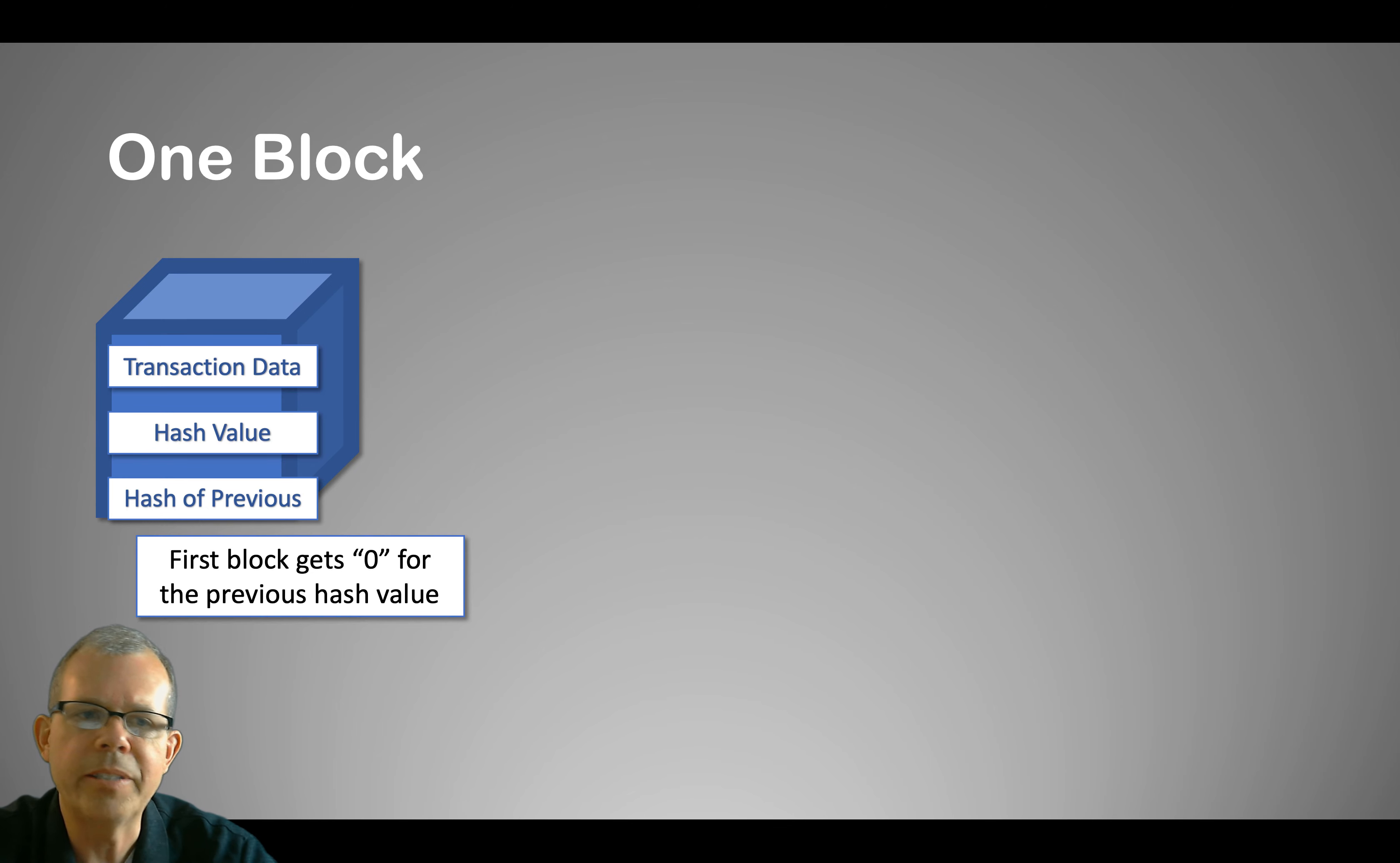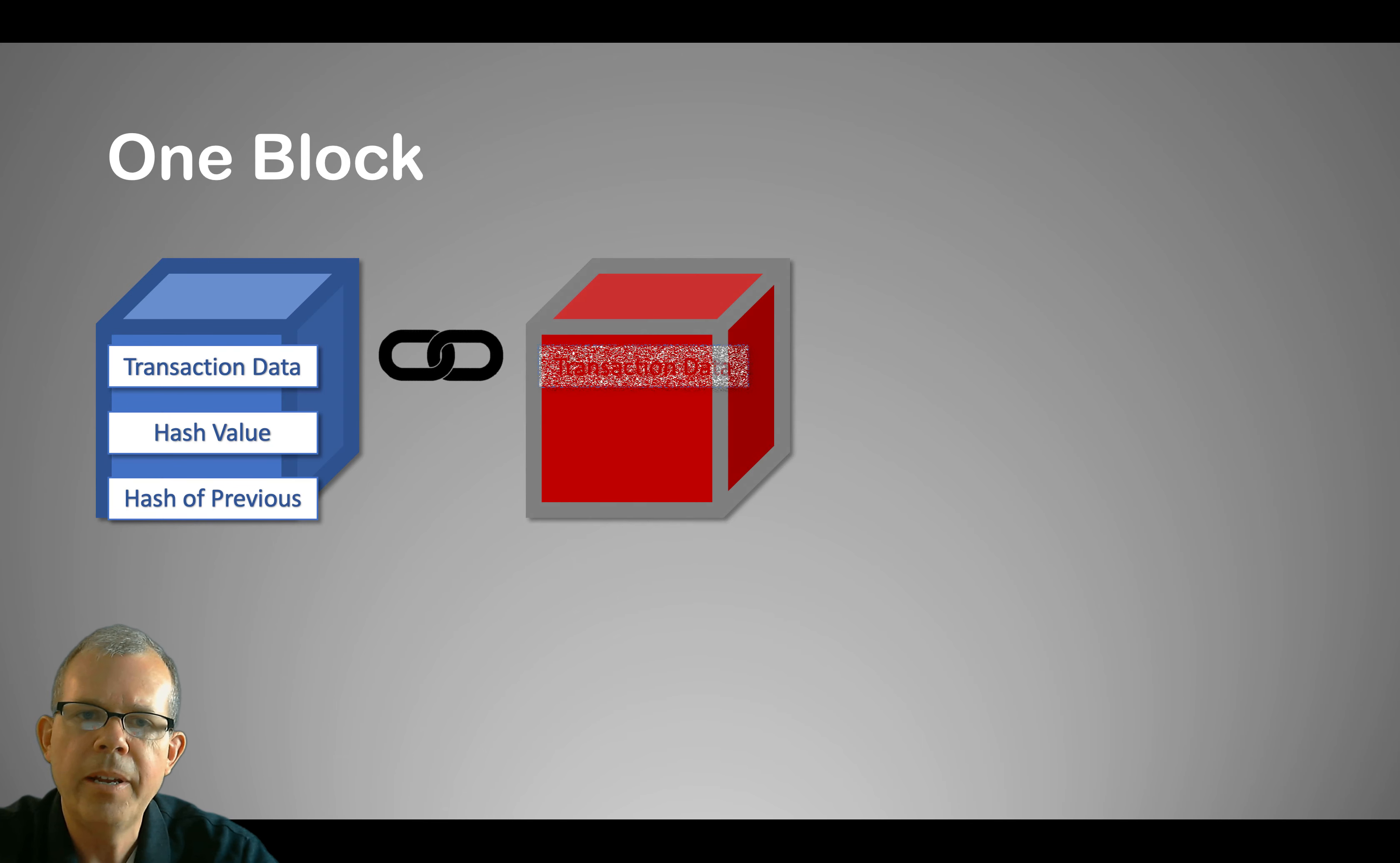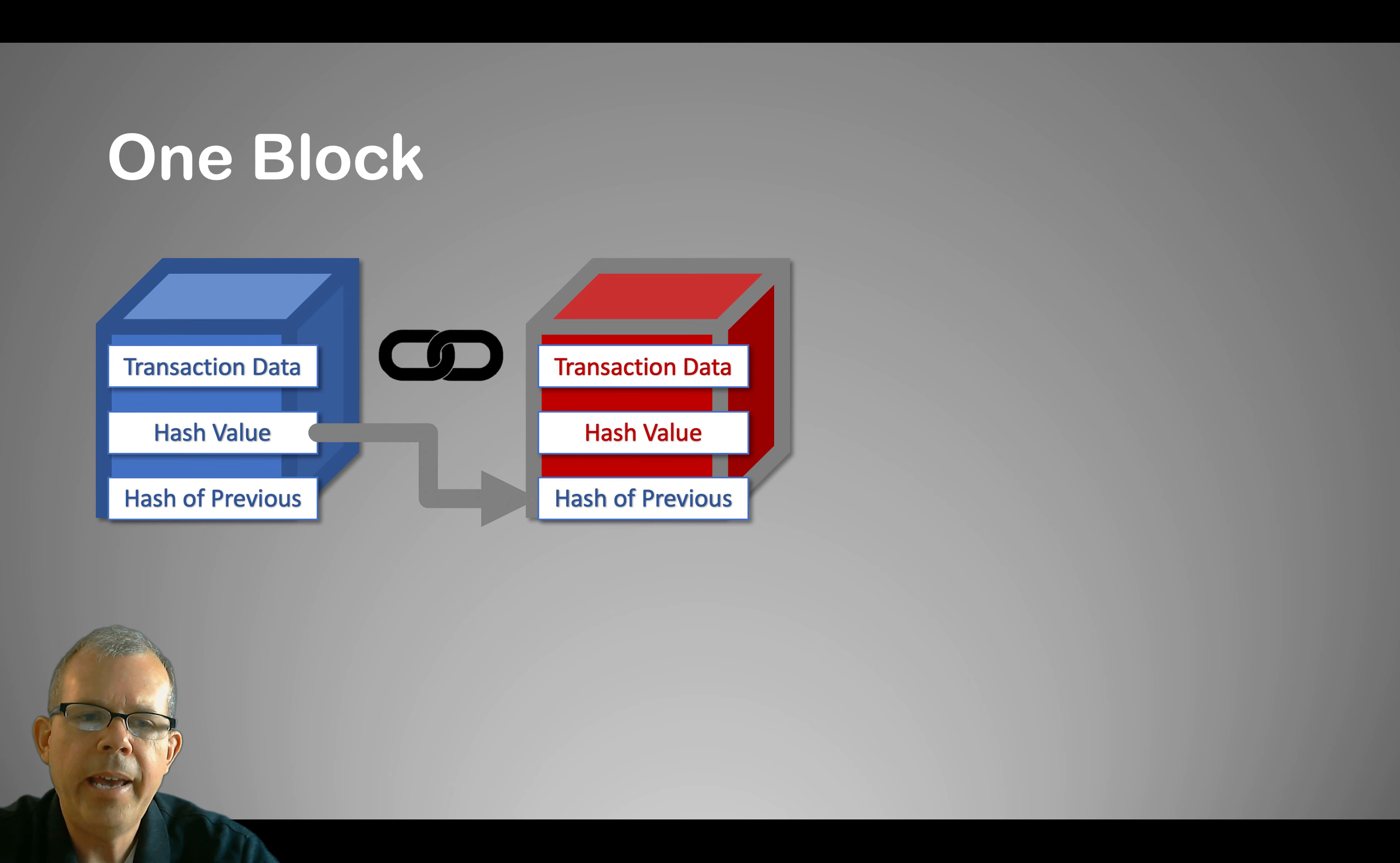But now let's make another transaction. So now we have something else in the chain. We're going to have another item. In this case, maybe there's another payment, maybe there's a refund. Something goes along the lines that we're going to have another item. We're going to create a hash value for this red block. And now to verify that these two blocks make a chain, we are going to include the hash value from the blue block. So now we have a combination of these three values that depend on the previous one. And the process repeats.